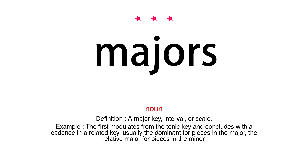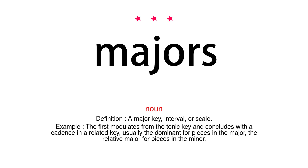Noun. Definition: A major key, interval, or scale. Example: The first modulates from the tonic key and concludes with a cadence in a related key, usually the dominant for pieces in the major, the relative major for pieces in the minor.